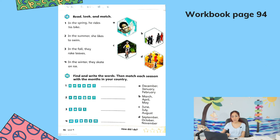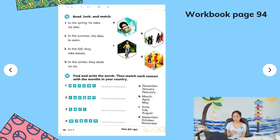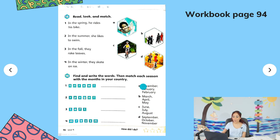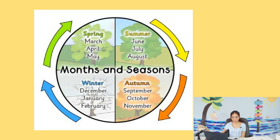Match the sentences with different colors, paying attention to the vocabulary and the activities shown. When you finish, go to Activity 16, which says 'Find and write the words,' then match each season with the months. You need to unscramble the letters and write the four seasons. Then match them with the months: A — December, January, February; B — March, April, May; C — June, July, August; D — September, October, November.